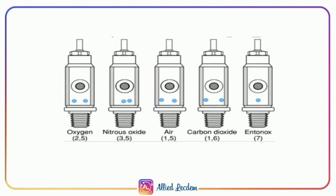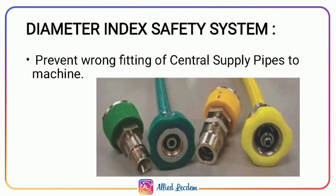While the pin index safety system prevents wrong fitting of cylinders to the machine, the diameter index safety system prevents wrong fitting of centrally supplied pipes to the machine.